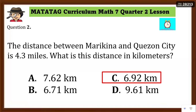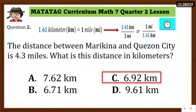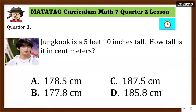The answer for number 2 is letter C — 6.92 kilometers. The distance between Marikina and Quezon City is 4.3 miles — gaano kalayo ang distansya nila sa kilometers? We have to use the conversion unit 1.61 kilometer over 1 mile to cancel 'miles.' So 4.3 miles multiplied by 1.61 gives 6.92 kilometers.